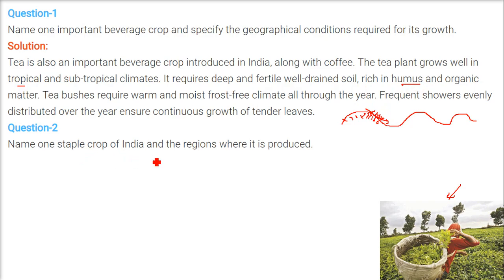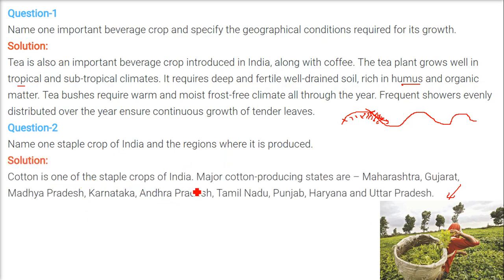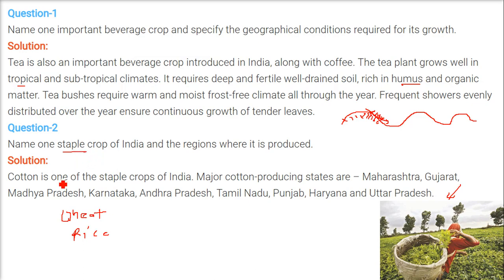Name one staple crop of India and the regions where it is produced. Cotton is one of the staple crops of India. Major cotton-producing states are Maharashtra, Gujarat, Madhya Pradesh, Karnataka, Andhra Pradesh, Tamil Nadu, Punjab, Haryana and Uttar Pradesh. You can also give an example of wheat or rice, since staple means food crop — Khadhyan Fasli. We took cotton just to give an idea of another popular crop, but the example of wheat and rice is coming in the next questions.